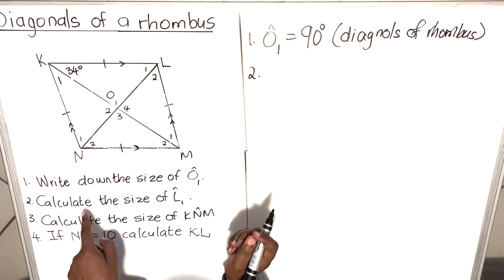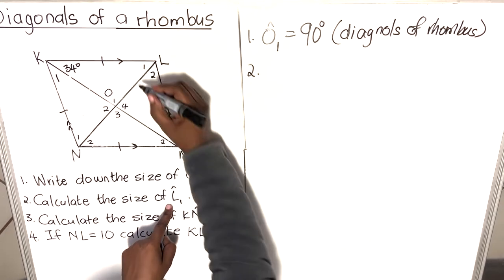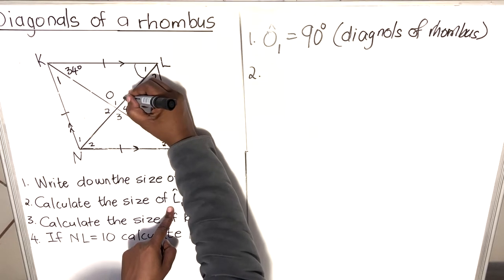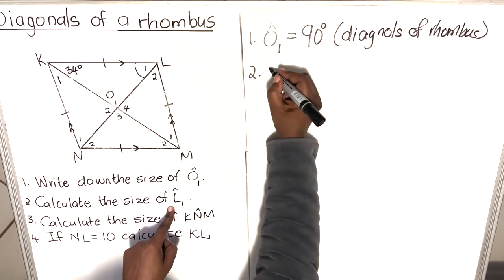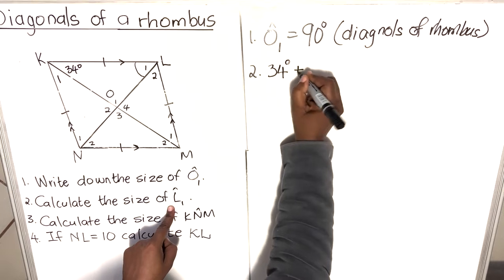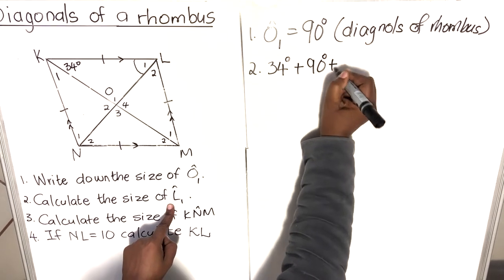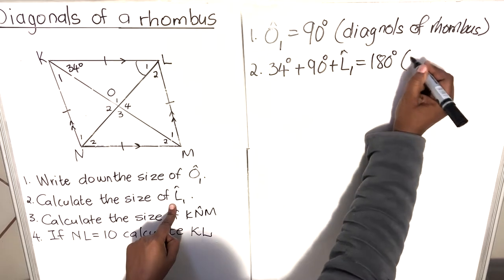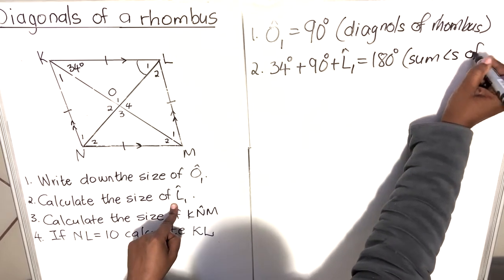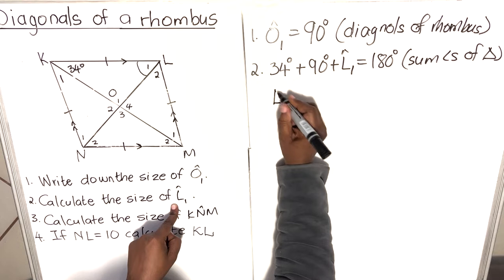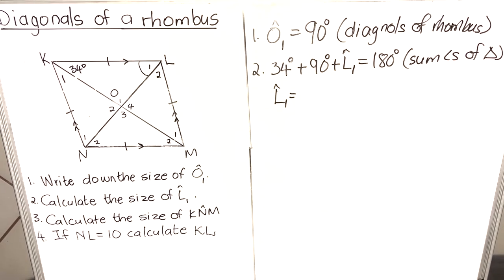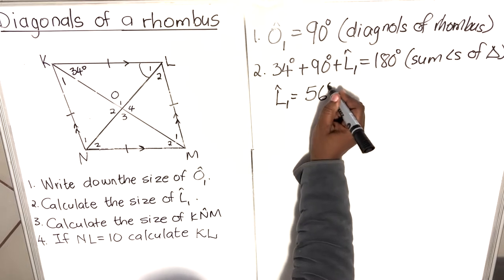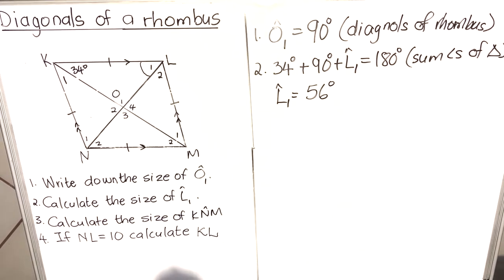Question two: calculate the size of L1. L1 is this angle here. We have 34 degrees plus 90 degrees plus L1 equals 180 degrees — reason: sum of angles of a triangle. So L1 equals 180 minus 90 minus 34, giving L1 equal to 56 degrees.